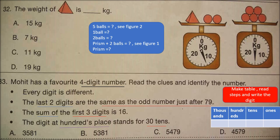Question number 33: Mohit has a favorite four-digit number. Read the clues and identify the number: every digit is different; the last two digits are the same as the odd number just after 79; the sum of the first three digits is 16; the digit at the hundreds place stands for 30 tens. Make a table for the four-digit number and write the digit at the correct place. Try yourself and see the solution at the end of the video.